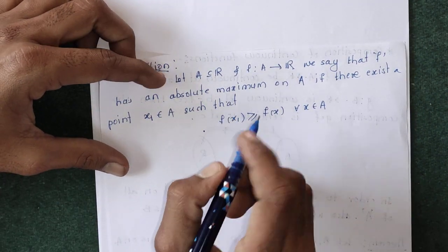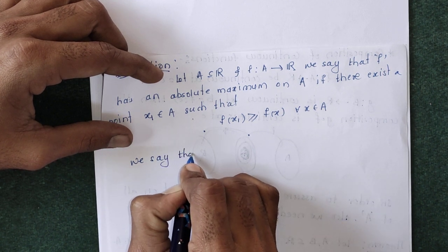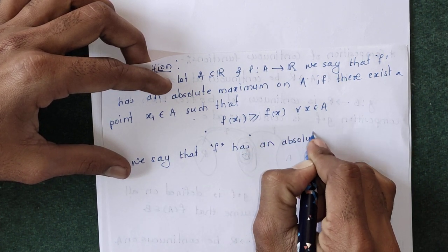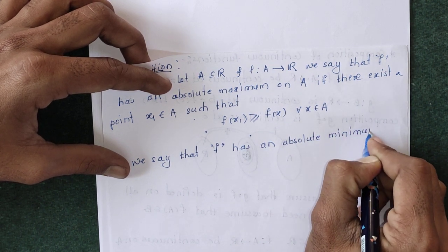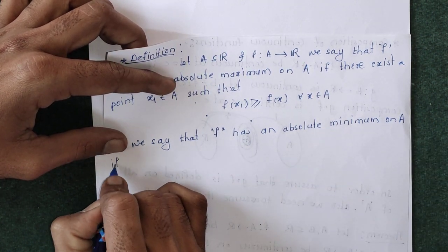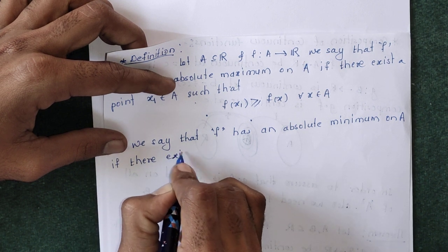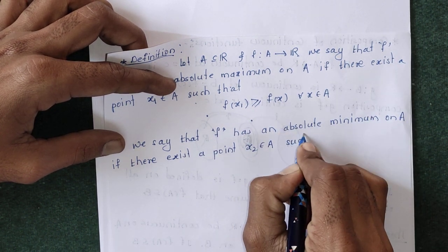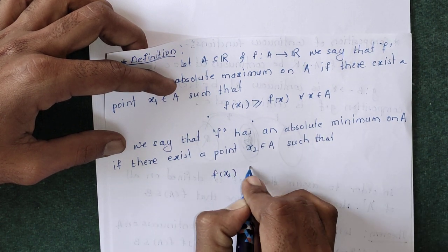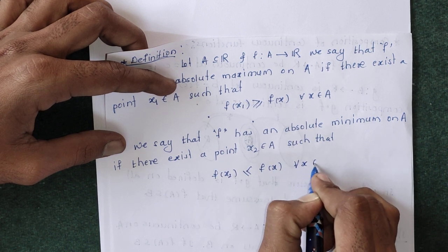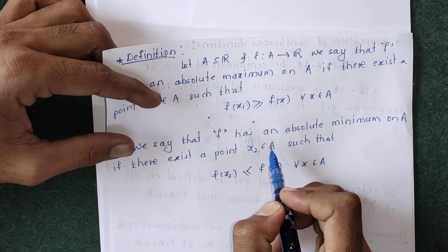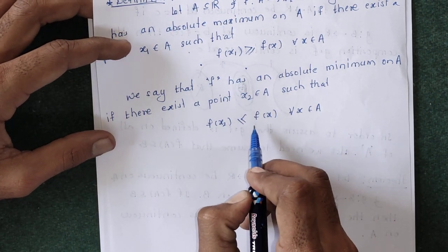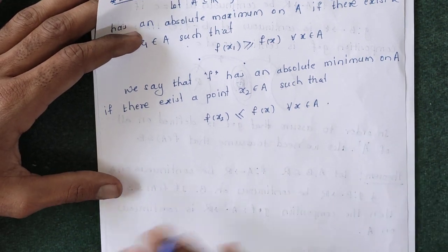Similarly, we say that f has an absolute minimum on A if there exists a point x₂ belonging to A such that f(x₂) ≤ f(x) for all x belonging to A. That is, there exists some element in domain A whose image f(x₂) is less than or equal to the image of the rest of the elements in that domain. This is the definition of absolute minimum.